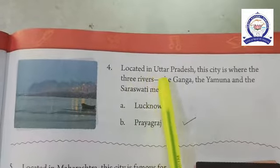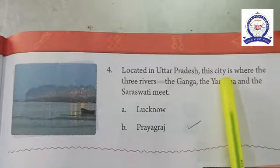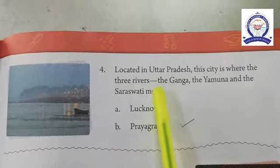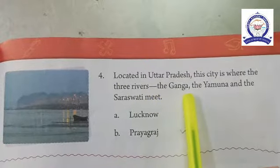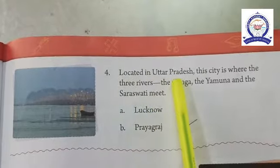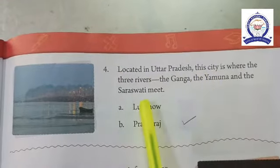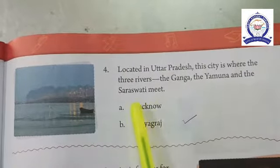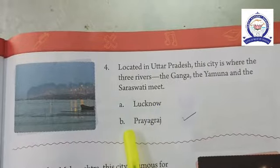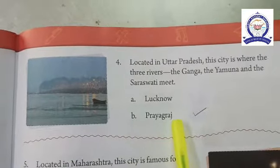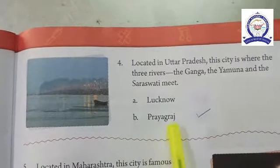Number four: located in Uttar Pradesh, this city is where three rivers meet — the Ganga, the Yamuna, and the Saraswati. The answer is option B — Prayagraj.